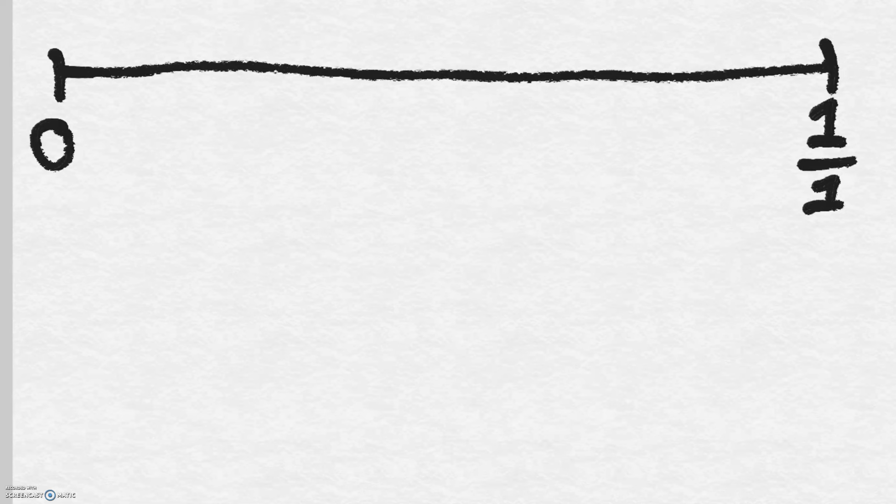Now you can use a number line to explain probability. If something is 1, or absolute, that means it is certain to happen - it has a probability of 1. If something is impossible to happen, it has a probability of 0.